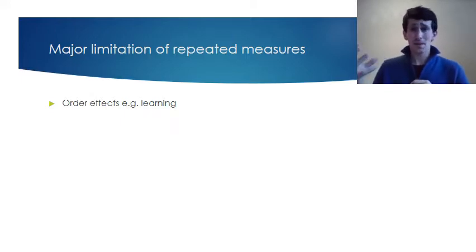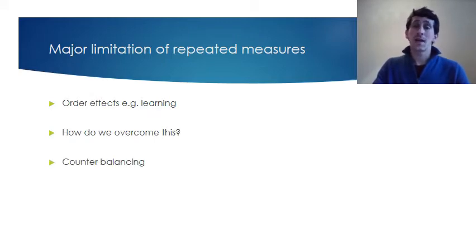So that's a major problem with repeated measures, and there is a way of counteracting this, and this is where something called counterbalancing comes into it. That's what we're going to learn how to do now.